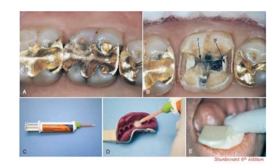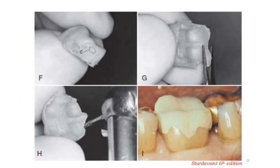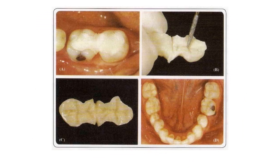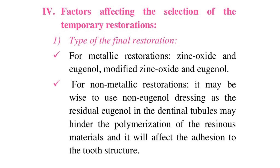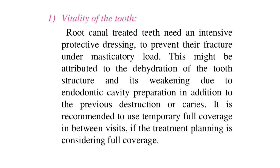Factors affecting the selection of temporary restorations. First, type of the final restoration: for metallic restorations, zinc oxide and eugenol or modified ZOE is used; for non-metallic restorations, it is wise to use non-eugenol dressing, as residual eugenol in the dentinal tubules may hinder polymerization of resinous materials and affect adhesion to tooth structure. Second, vitality of the tooth: root canal treated teeth need intensive protective dressing to prevent fracture under masticatory load, attributed to dehydration and weakening of tooth structure due to endodontic cavity preparation. Temporary full coverage is recommended between visits if full coverage is planned.